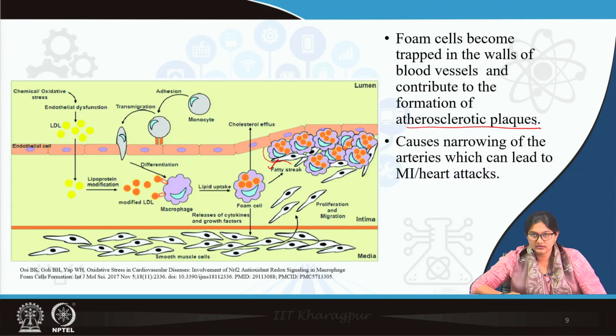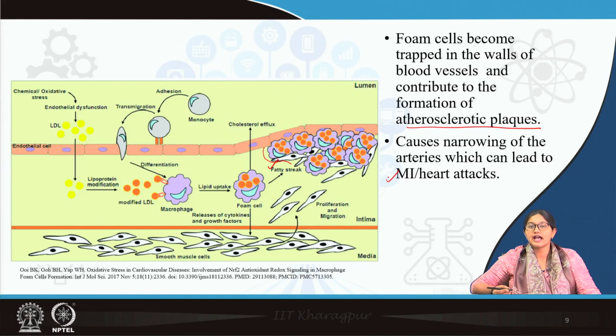These foam cells accumulate in the intima media of vessels forming fatty streaks, narrowing the lumen and eventually forming an atherosclerotic plaque. This atherosclerotic plaque causes narrowing of blood vessels, predisposing to myocardial infarction. This is how LDL contributes to formation of atherosclerotic plaque and ultimately atherosclerosis.